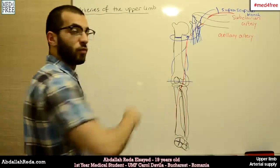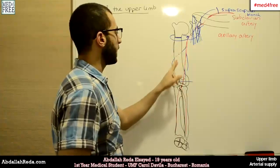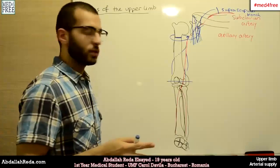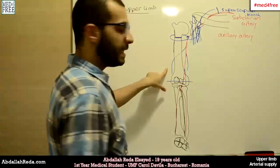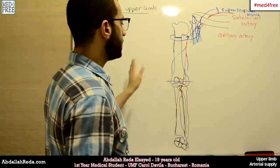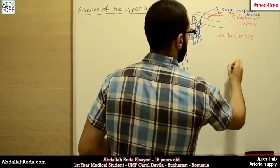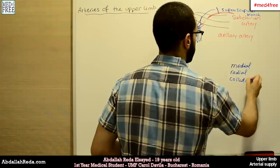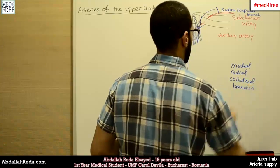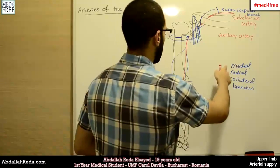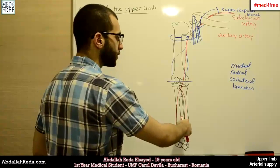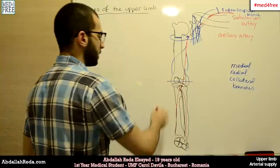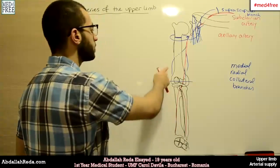The deep branch gives other branches. We have a branch that supplies the humerus itself — a nutrient branch for the humerus — and two other important branches: a medial collateral branch and a radial collateral branch. From the names, one will anastomose with a branch from the ulnar artery because it's medial, and the other will anastomose with a branch of the radial artery because it's on the radial side.